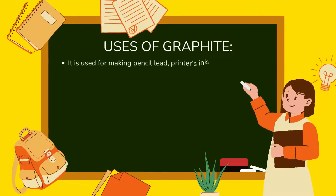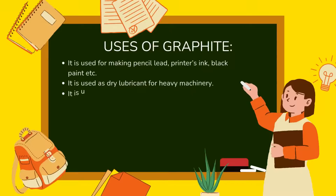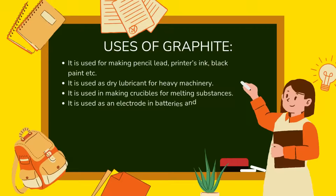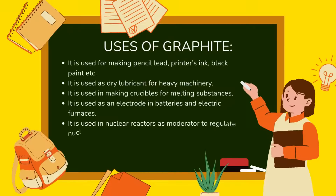Uses of graphite: it is used for making pencil lead, printer ink, and black paint. It is used as a dry lubricant for heavy machinery. It is used in making crucibles for melting substances. It is used as an electrode in batteries and electric furnaces. It is used in nuclear reactors as a moderator to regulate nuclear reactions. It is also used in making artificial diamonds.